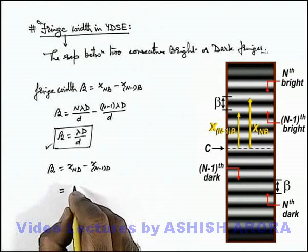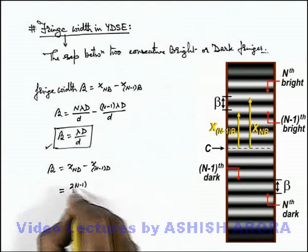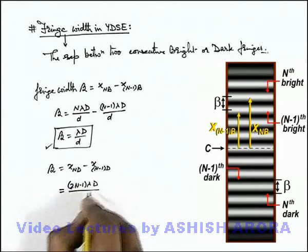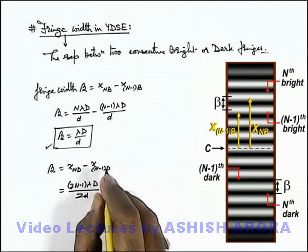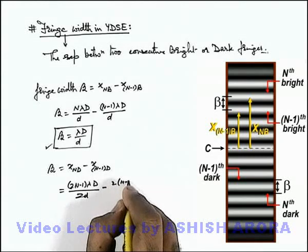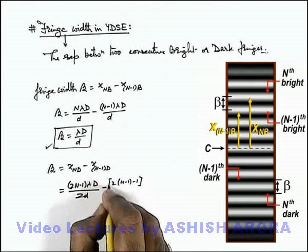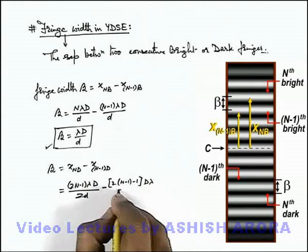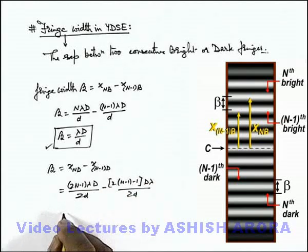If we substitute the values here we can see this (2n-1)λD/2d minus this will be twice of (n-1-1)λD/2d. On simplifying we are getting the value of fringe width is equal to same as λD/d.